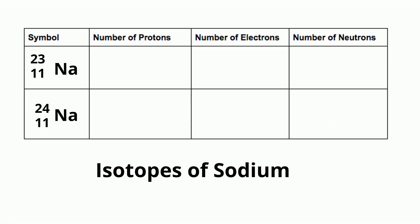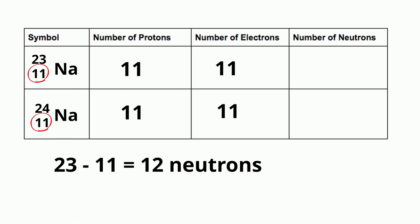So let's look at sodium 23 and sodium 24. They both have 11 protons and 11 electrons, which gives them a neutral charge. Now, for the neutrons. Sodium 23 has a mass number of 23 minus 11, which is the number of protons, which equals 12 neutrons.